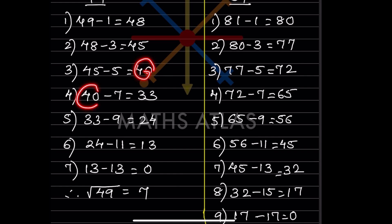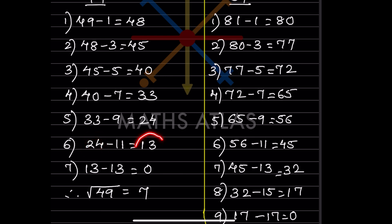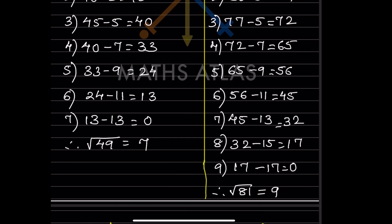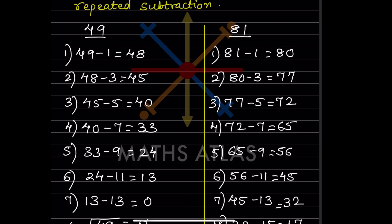Then 40 minus 7 is 33, 33 minus 9 is 24, 24 minus 11 is 13, and 13 minus 13 is 0. Wherever you get 0, you stop. So how many steps did you get? At the 7th step you got 0, so the square root of 49 is 7.